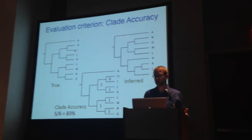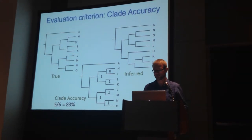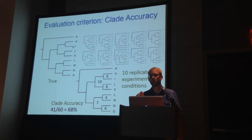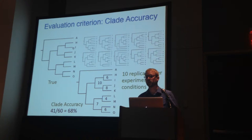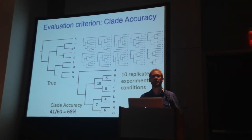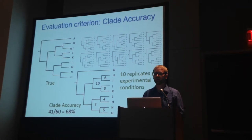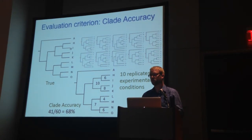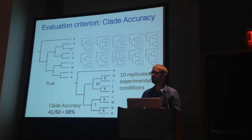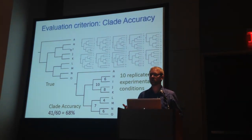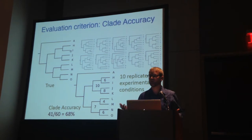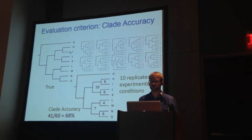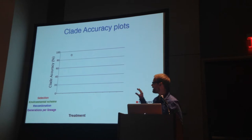Clade accuracy is 83% when the H and I sister clade isn't reconstituted in the inferred tree. We have ten replicates for each experimental condition, and I took a single tree from each replicate — either the single tree with the greatest maximum likelihood value or the single tree with the greatest posterior probability. I acknowledge this throws out a lot of data, but it gives a broad stroke of the accuracy of these methods. We then took the mean clade accuracy for each experimental condition.